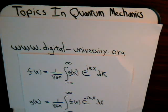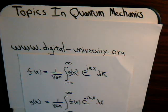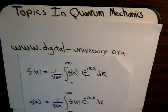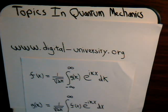This is video number 14 in our Topics in Quantum Mechanics series from digital-university.org. In this video we want to talk about the Fourier transform of the Dirac delta function, which will give us the tools to take a closer look at the properties of the momentum operator eigenfunctions as well as the linear momentum operator eigenfunctions. The playlist for all videos in this series is at digital-university.org.